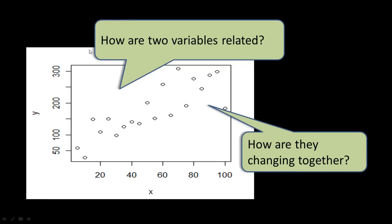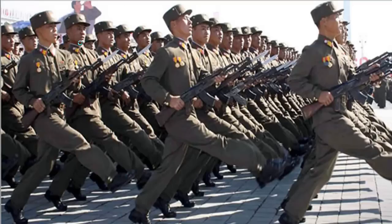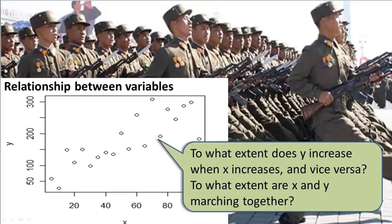To what extent are x and y marching together — moving in lockstep? Being statistical and mathematical, we want to assign a number to that relationship so we can compare when two variables are more closely related than two others are.